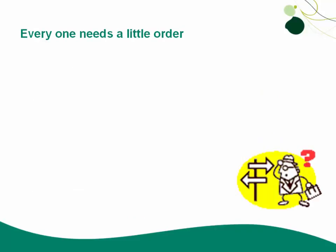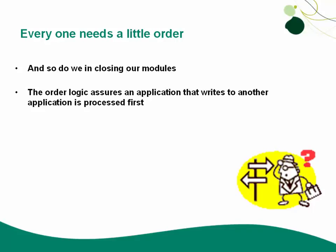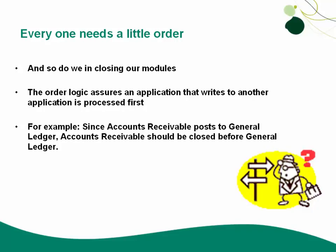We need to make sure that we close our modules in the order they should be closed. There is a certain order logic, and that is to assure that every application that writes to another is processed first. For example, since accounts receivable posts to General Ledger, accounts receivable should be closed before General Ledger is closed.